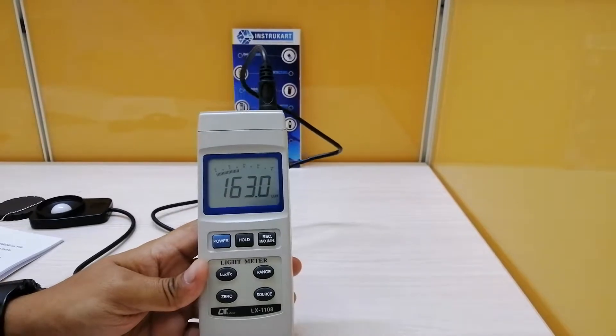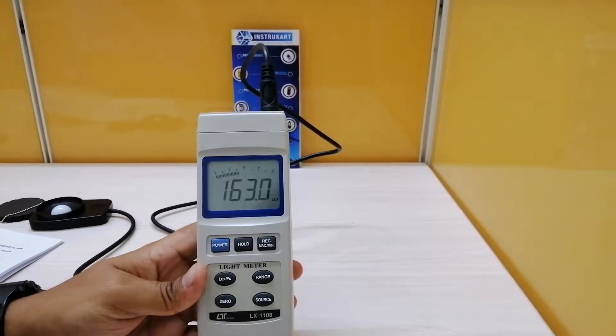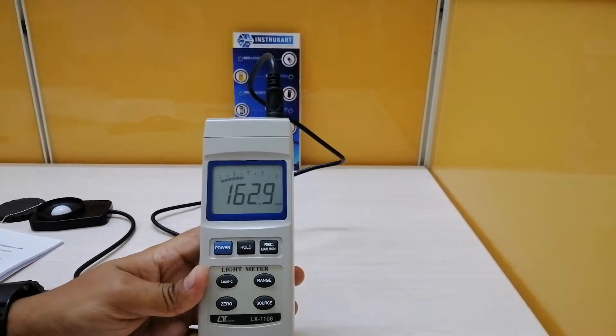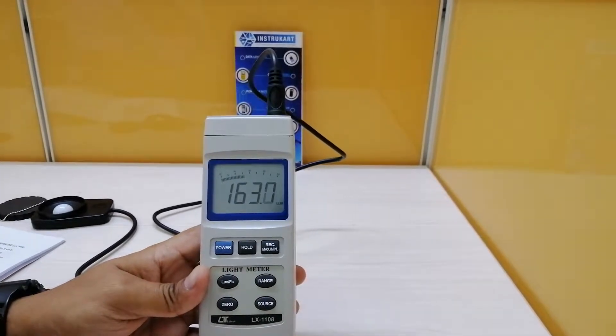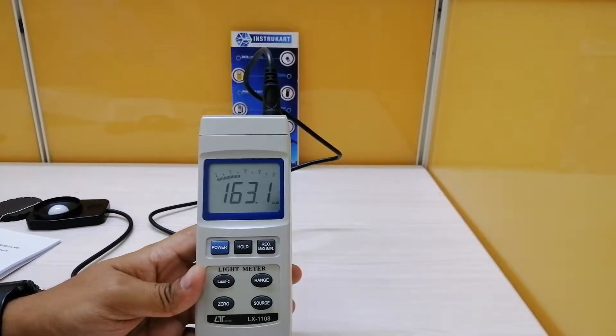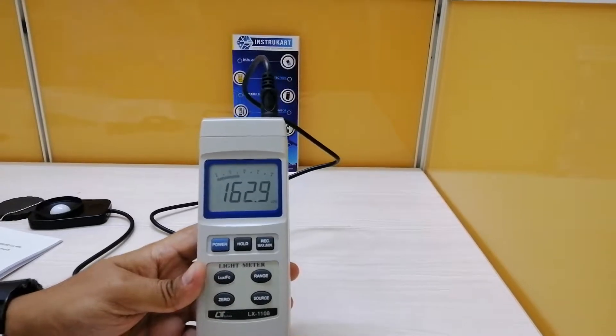We have a very high lux range meter from Lutron, model number LX1108. This lux meter can take the lux range of almost 400,000 lux, which starts from 40 lux.